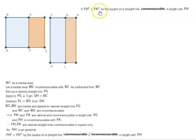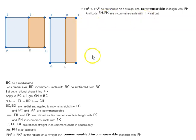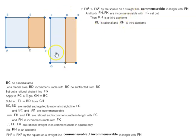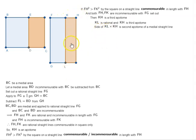Case 1: If FH squared is greater than FK squared by the square on a straight line commensurable in length with FH, and both FH and FK are incommensurable with FG set out, then KH is a third apotome. Now KL, which is equal to FG, is rational, and KH is a third apotome, which means the side of the rectangle KL by KH — that is, the side of a square equal to this rectangle — is a second apotome of a medial straight line.